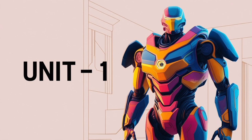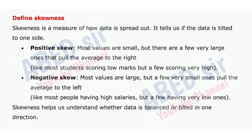First unit. First important short question: Define skewness. Skewness is a measure of how data is spread out — it tells us if the data is tilted to one side. Positive skew: most values are small, but there are a few very large ones that pull the average to the right, like most students scoring low marks but a few scoring very high. Negative skew: most values are large, but a few very small ones pull the average to the left, like most people having high salaries but a few having very low ones. Skewness helps us understand whether data is balanced or tilted in one direction.